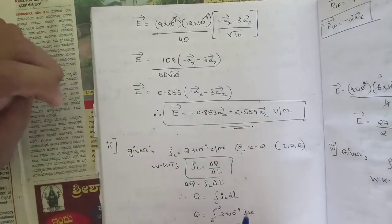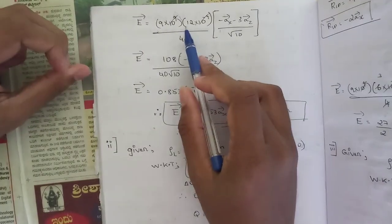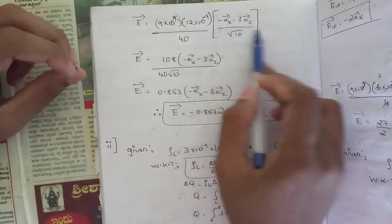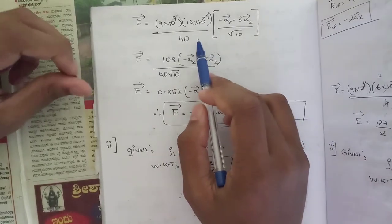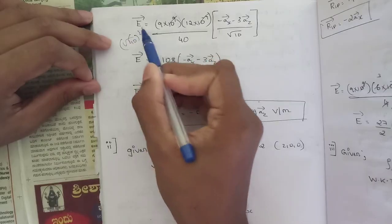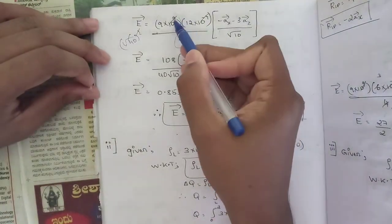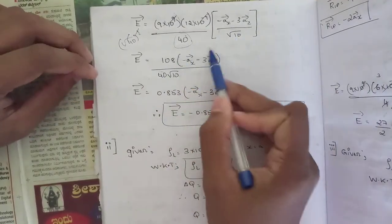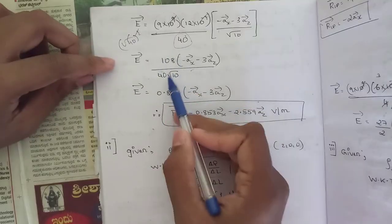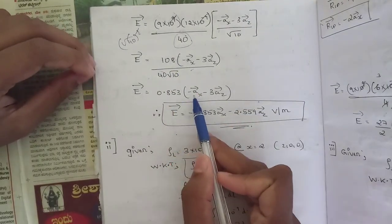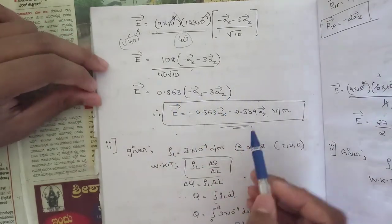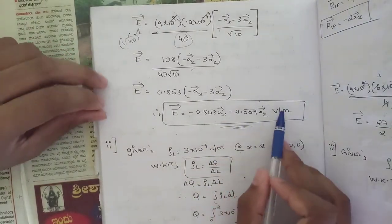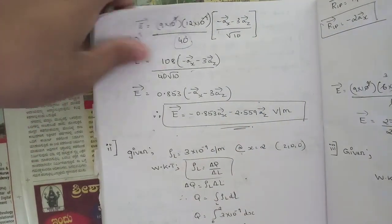The 10⁹ and 10⁻⁹ cancel, leaving 12 times 9 equals 108 divided by 40√10, times (−ax − 3az). Dividing gives 0.853 times (−ax − 3az). Simplifying: E equals −0.853 ax minus 2.559 az volts per meter. This is the answer for the first sub-question.